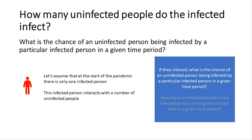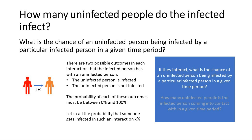I'm going to build this model up piece by piece. At the start of the pandemic, we're going to assume there's just one infected person interacting with a whole number of uninfected people. When an infected person interacts with an uninfected person, there are two possible outcomes: either the uninfected person gets infected or they don't. The probability of infection is K%, where K represents any number between 0 and 100. For simplicity, I'm going to assume that in every single interaction there's exactly the same likelihood of infection.